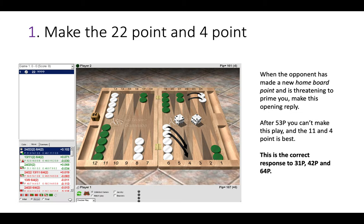Now this is the first main point. Make the 22 point and the 4 point. So when the opponent has made a new inner home board point and is threatening to prime you, you do not want to be stuck back on the 24 point. So it's better to step up. So this is true after your opponent makes the 4 point, makes the 2 point or makes the 5 point.